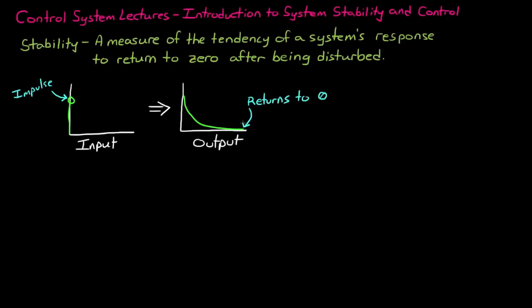If instead the response blows up to infinity, then the system is unstable. Another way you might see this explained is that for a stable system, a bounded input produces a bounded output, or BIBO stability.